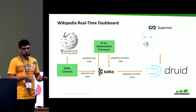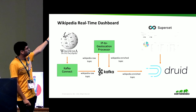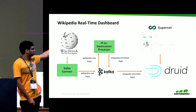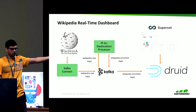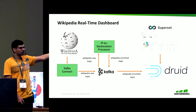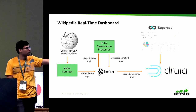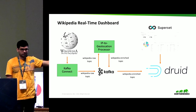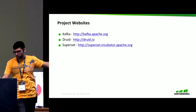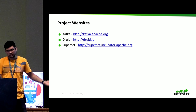To summarize how the whole Wikipedia dashboard works end-to-end: we had Wikipedia streams coming in. We used a simple Java application using Kafka Connect APIs to dump all raw events into a Kafka topic named 'wikipedia-raw'. Then using Kafka Streams, we created an IP-to-geolocation processor that reads those events from Kafka and writes them to another topic named 'wikipedia-enriched'. From that topic, we were pulling data into Druid using Druid's Kafka indexing service. Finally, we were using Superset to visualize all those events. These are the links to the project websites for additional information on any of these projects.